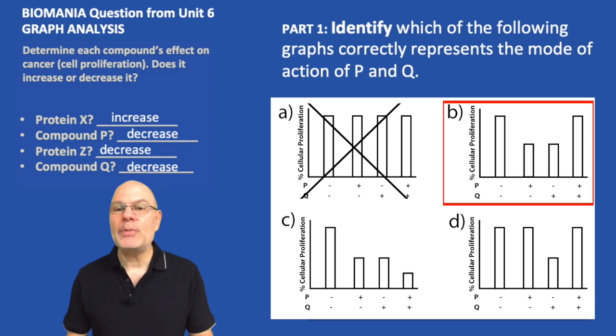Excuse me, when P is absent and Q is present, then cellular proliferation goes down. That also makes sense. But then when both are present in that fourth bar, cellular proliferation is the same as it is in the control. Doesn't make sense. Let's drop that one.